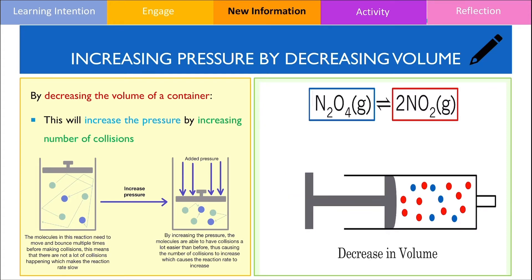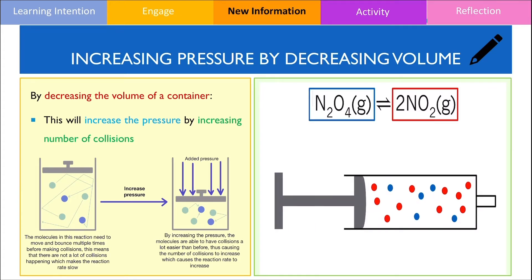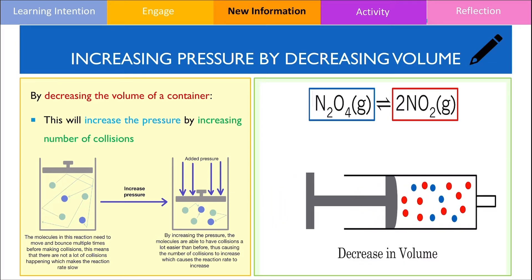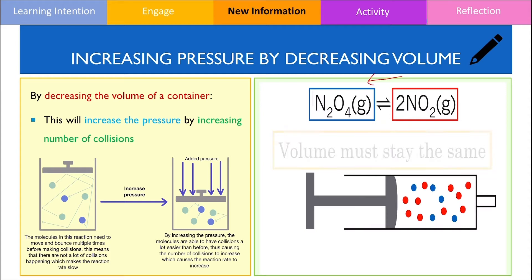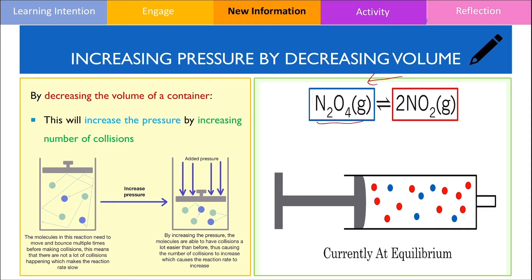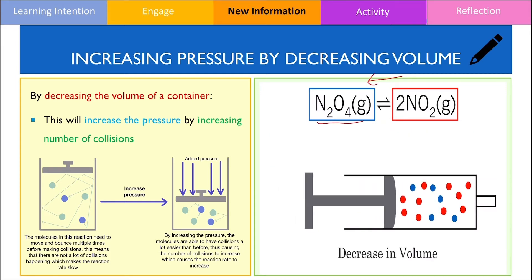As we decrease volume, pressure builds up. To alleviate the increased pressure, equilibrium shifts to the left, favouring the formation of N₂O₄, which is represented by the blue particles.